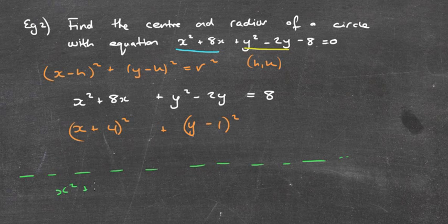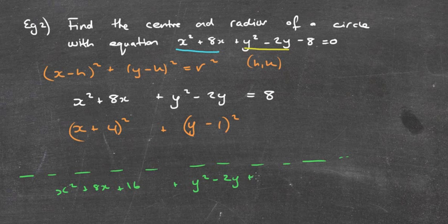Expanded. x squared plus 8x, well, that's what we've got up there, but I've got this plus 16. If I expand the next one, y squared minus 2y plus 1. Now, the issue is this. In orange, that's what I've got, that's what I've now created. However, when I expand it, it's not the same as this line. Instead of having x squared plus 8x, I've got this extra plus 16.